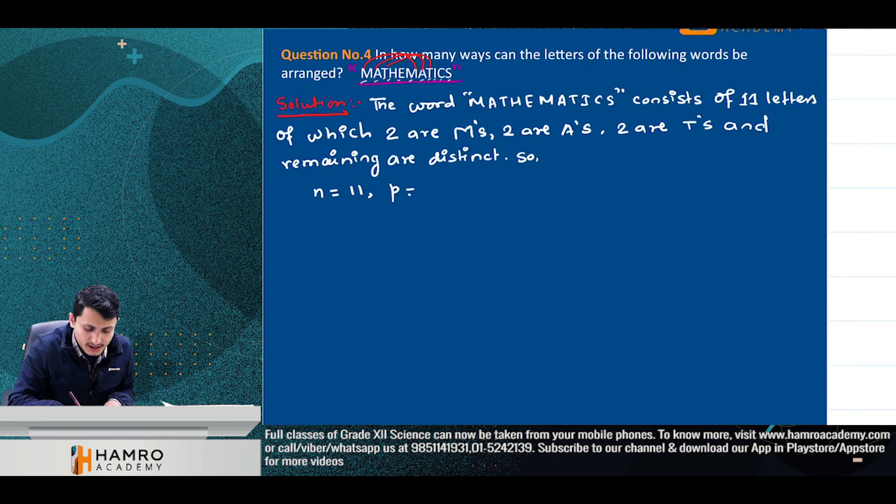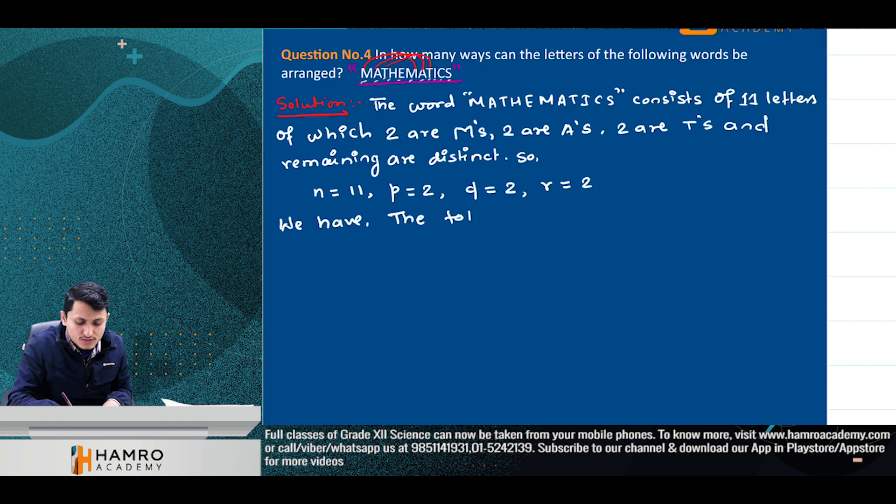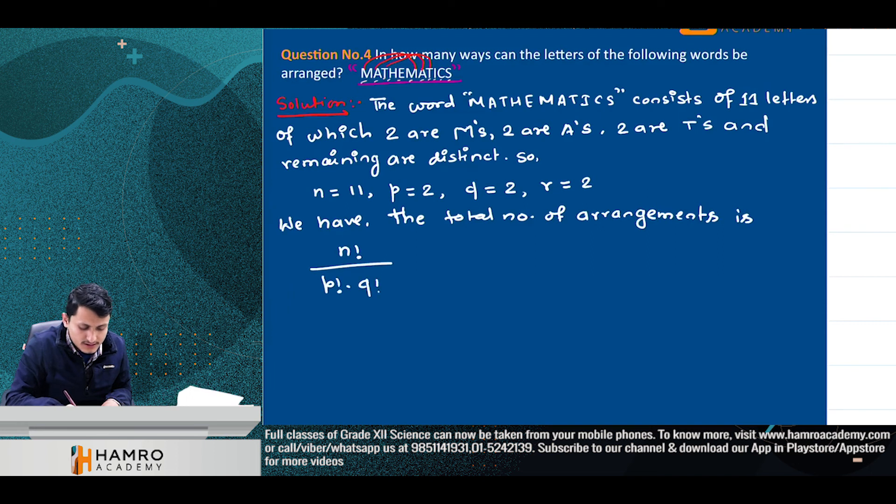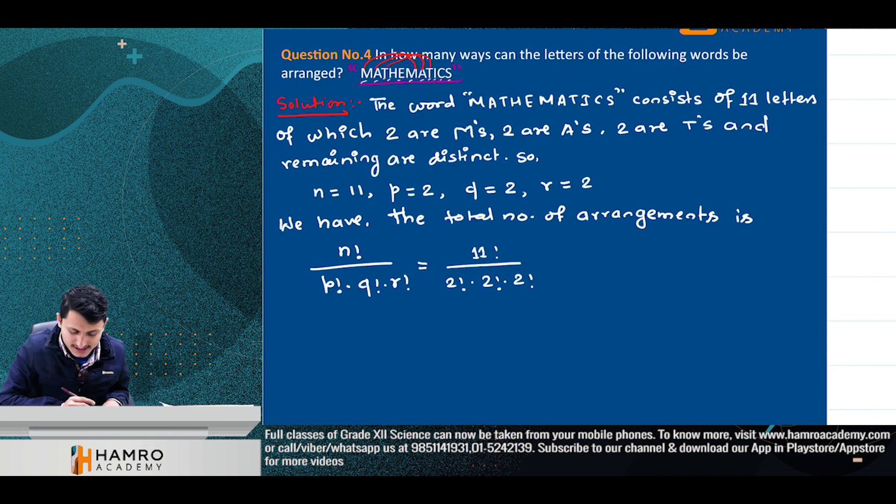We have the total number of arrangements or permutations. The total number of arrangements is given by n factorial divided by p factorial times q factorial times r factorial. This equals 11 factorial divided by 2 factorial times 2 factorial times 2 factorial.